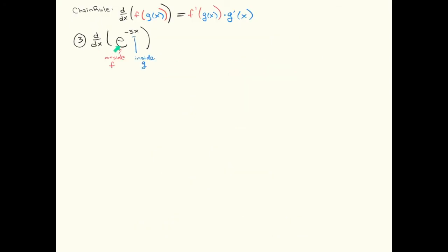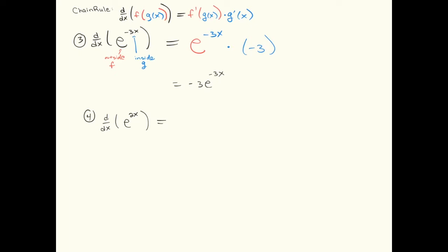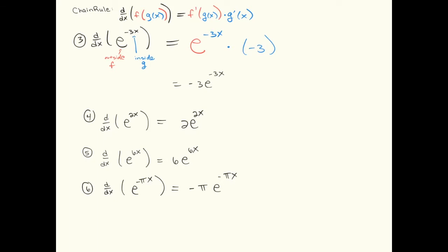Here we've got an outside function which is e, and the inside function is negative 3x. We're just going to do the chain rule without any assistance from the u notation. I take the derivative of the outside function f prime — the derivative of e to the u is e to the u. I leave the g of x, which is negative 3x, copied down. Then I multiply times the derivative of the inside function. The derivative of negative 3x is negative 3. I could simplify by bringing the minus 3 out in front. For another one: outside function is e, inside function is 2x. Take the derivative of the outside, leave the inside, multiply times the derivative of the inside.